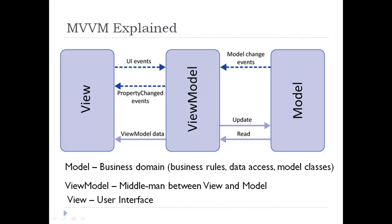The controller might take input from the view and place it on the model, or it might interact with a service to retrieve the model, then translate properties and place it on the view. The view model also exposes methods, commands, and other points that help maintain the state of the view, manipulate the model as the result of actions on the view, and trigger events in the view itself.